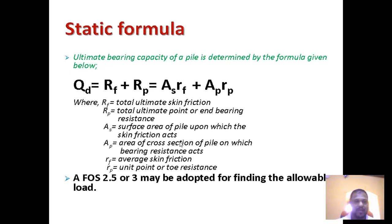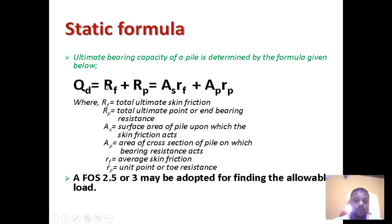Now let us move to the static formula. The static formula is the simplest and easiest formula to calculate the ultimate bearing capacity of a pile: Qd = Rf + Rp, where Rf is the total ultimate skin friction and Rp is the total ultimate point or end bearing resistance. If there is no end bearing resistance, Rp = 0. To calculate Rf: Rf = As × rf, where As is the surface area of the pile upon which skin friction acts.